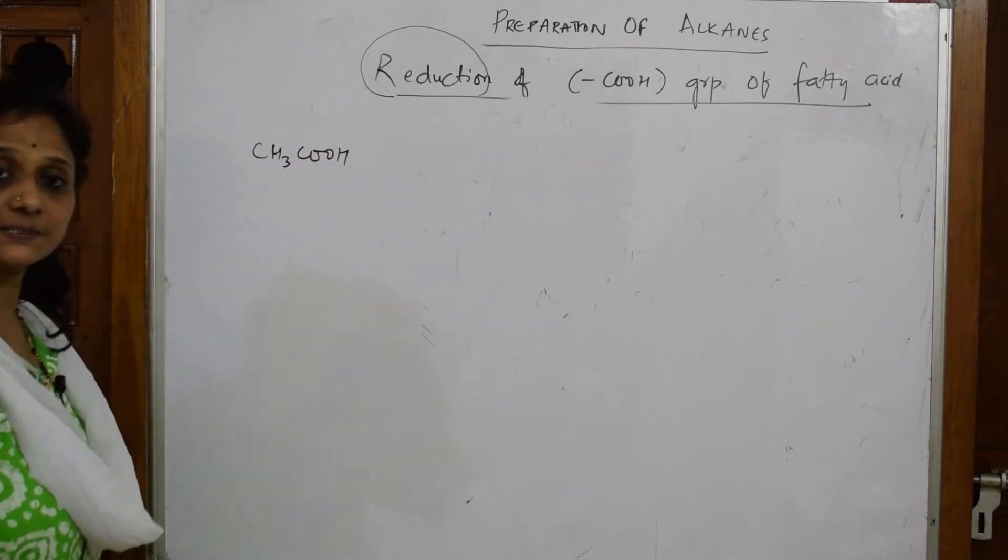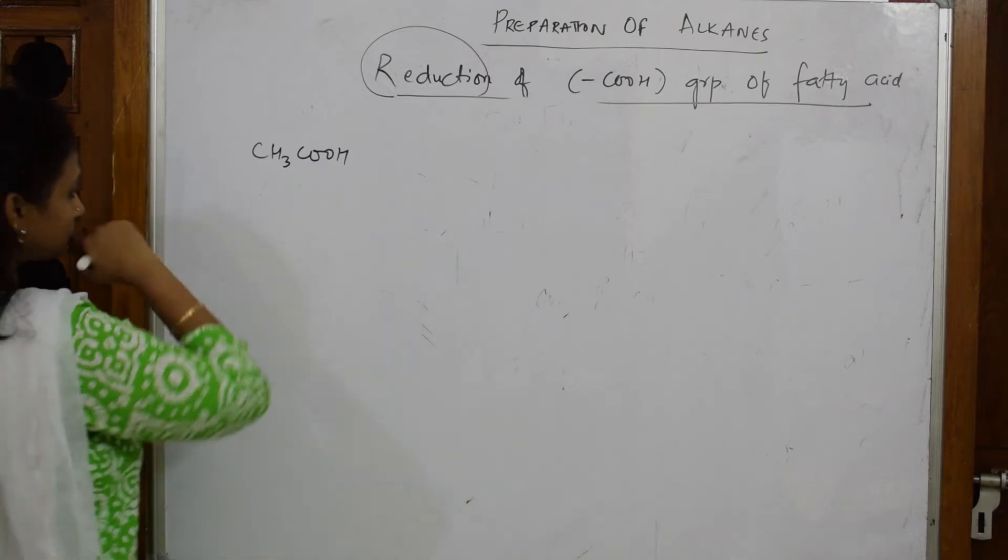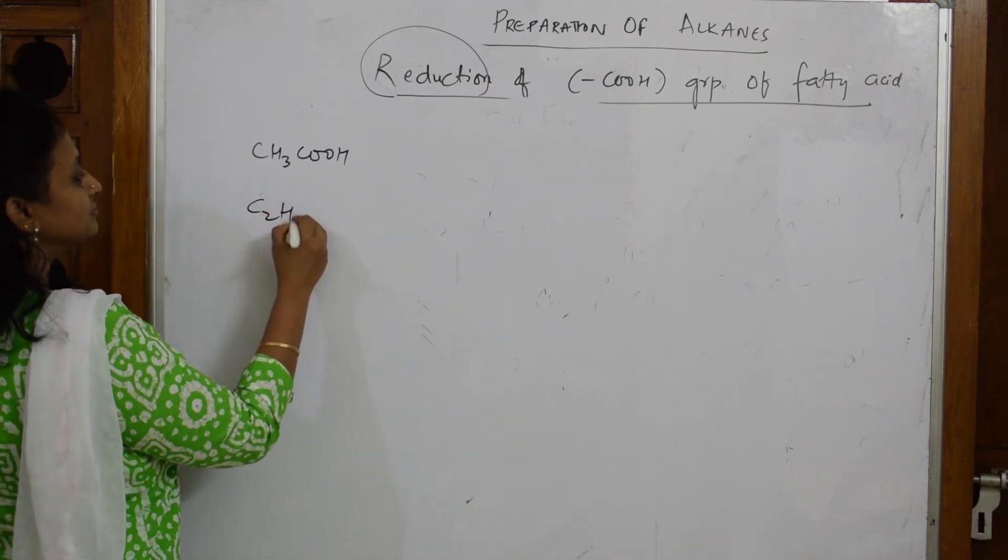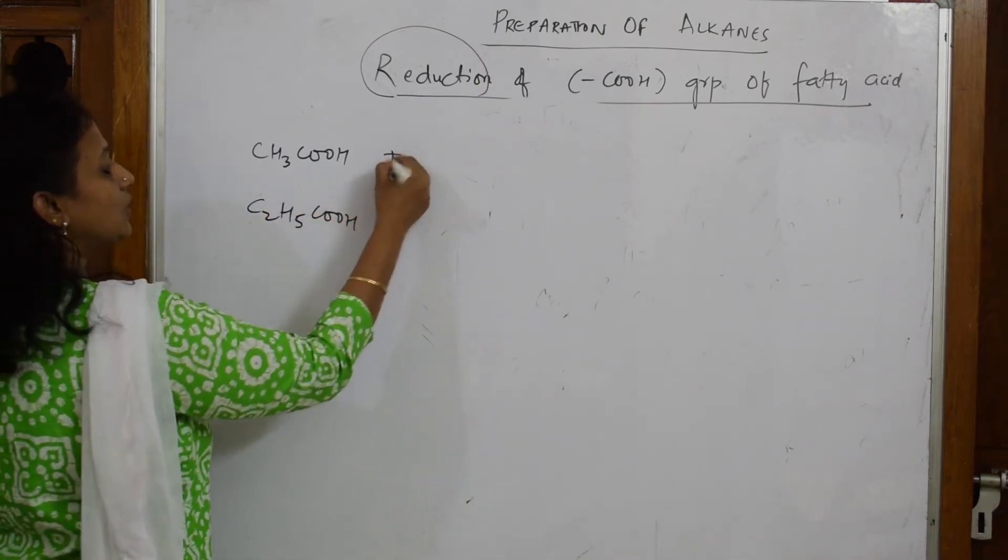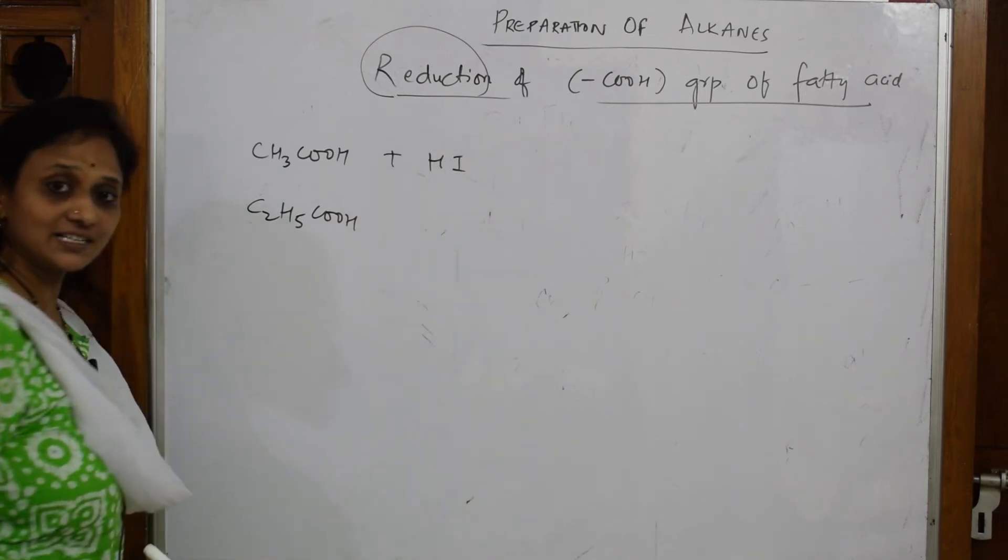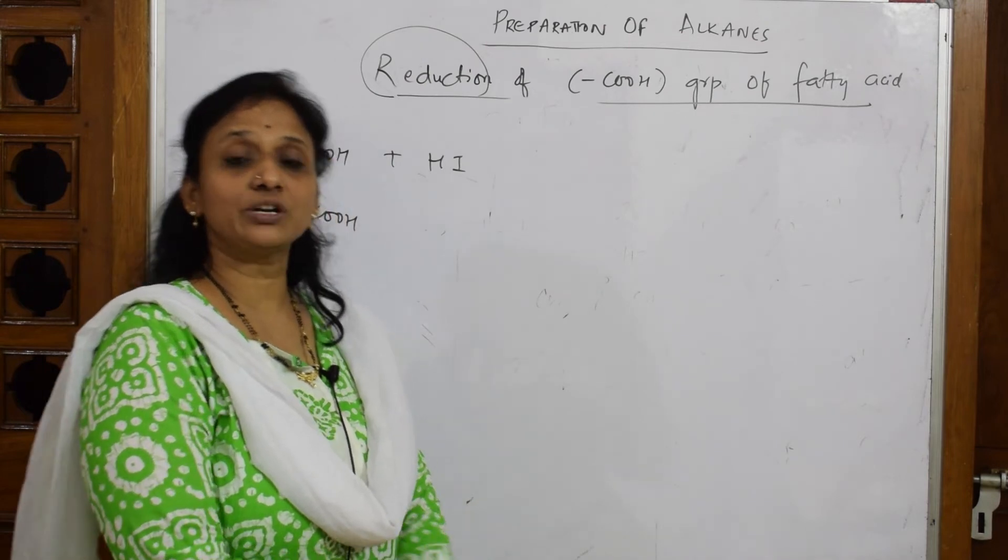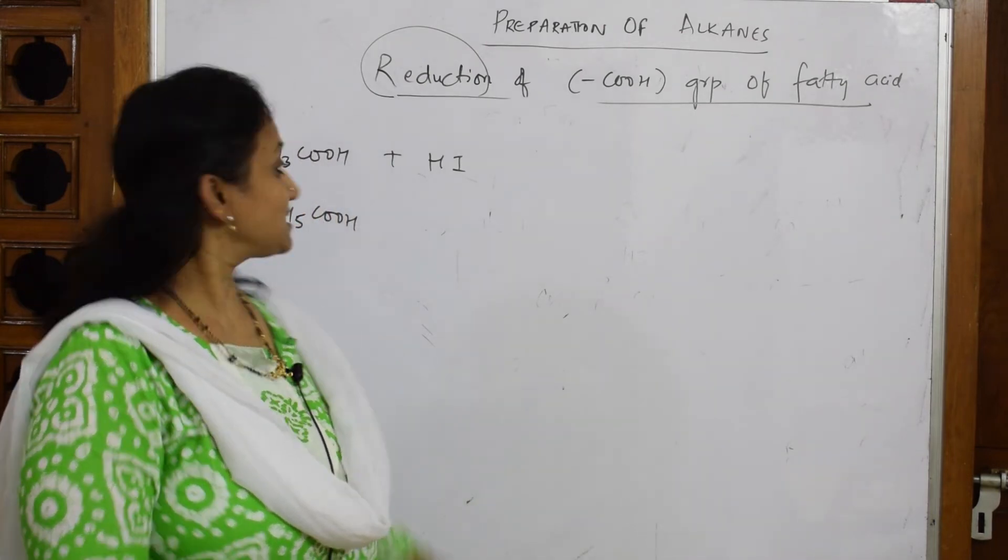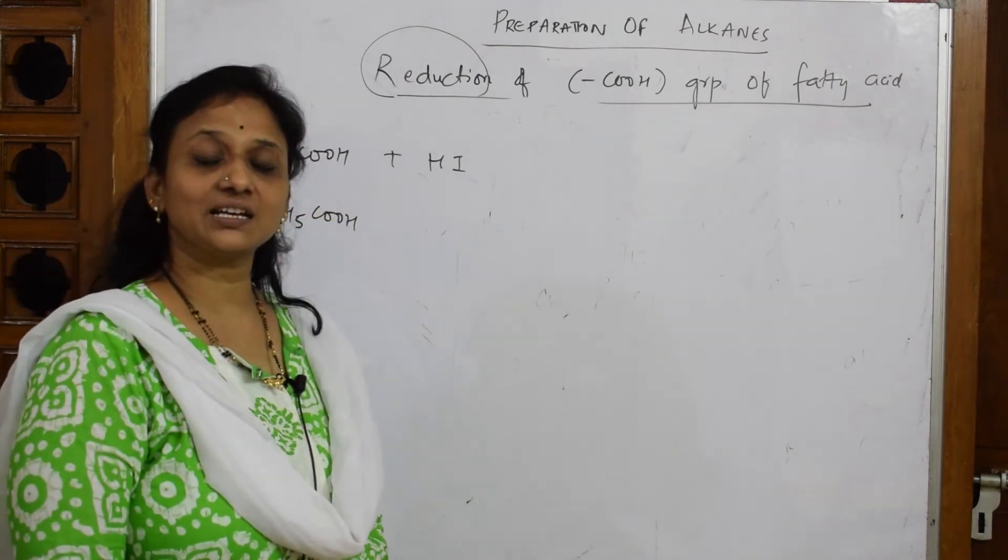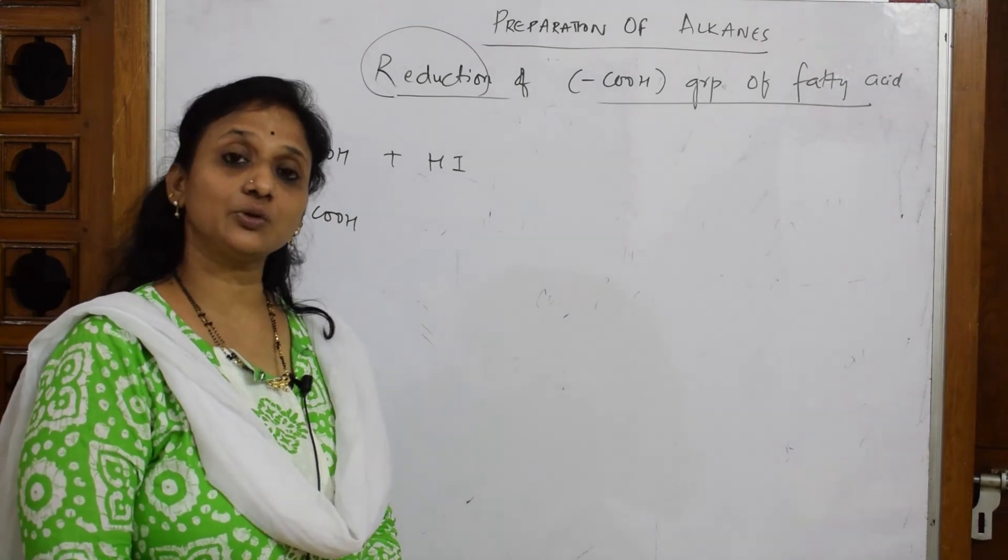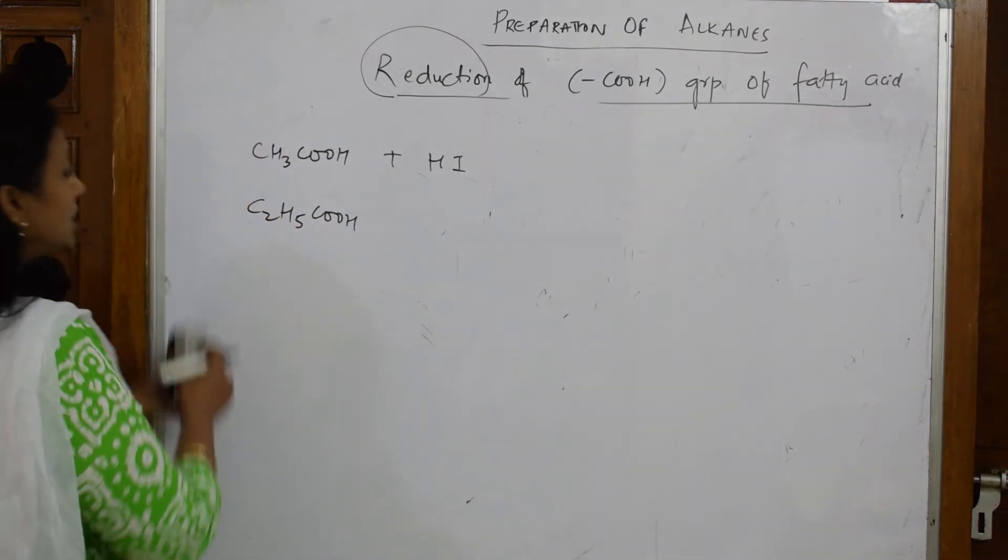The one I have picked up is acetic acid. Now I'm going to add HI. I said what is the HI category? It belongs to the second category, type 2 reducing agents, where the acidic group or whatever group is there, that thing is going to convert into an alkane.